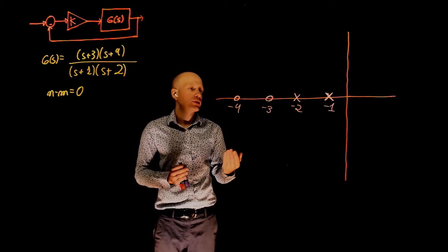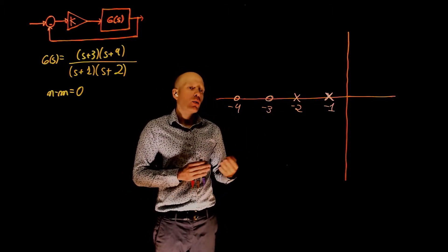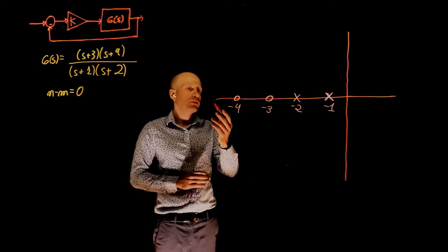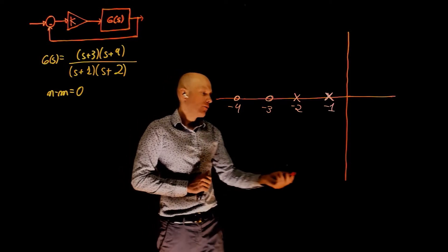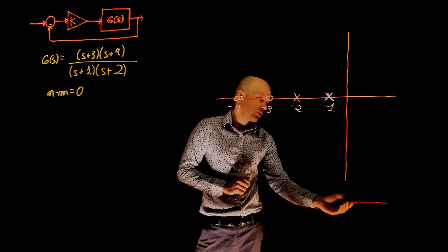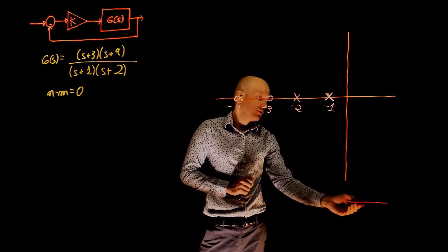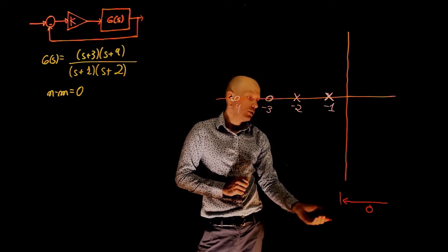All poles have now a zero to go to. Where is the root locus? Let's determine the segments of the real axis that have a root locus. If you start counting, we can start from plus infinity, the count up to negative 1 is zero.